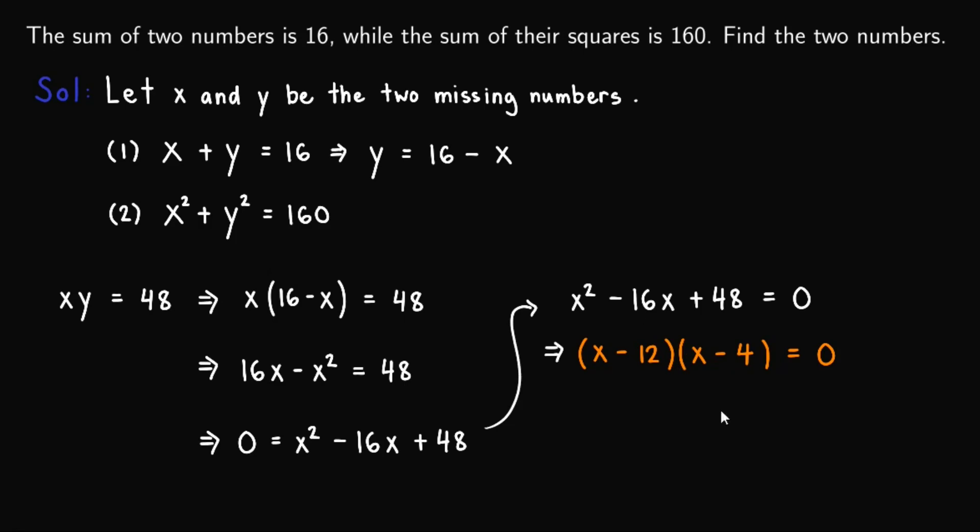Given this, for this equality to hold, either x minus 12 equals 0 or x minus 4 equals 0. So considering the two cases, we'll obtain x equals 12 or x equals 4. So we now have a value for x.